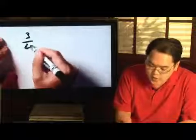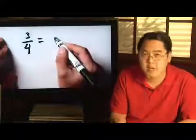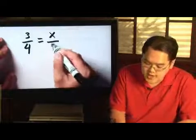So here's an example as to where cross multiplication becomes very important. Now, suppose you have a fraction, let's just say 3/4 equal to, and suppose you have another proportion, but this time you don't know what one of the sides is. Let's just say you have x over 9.